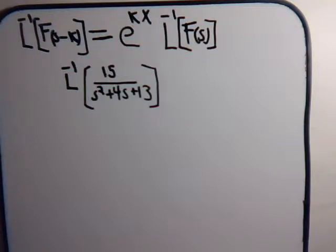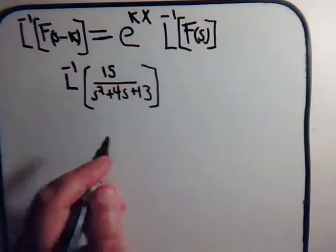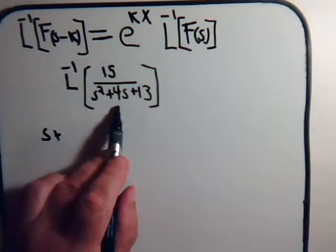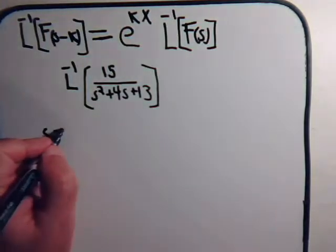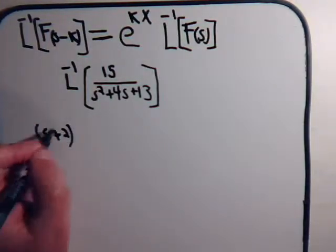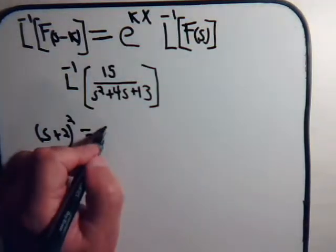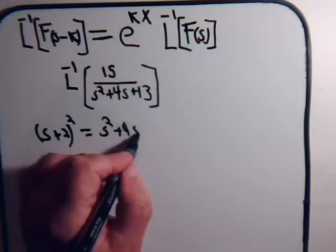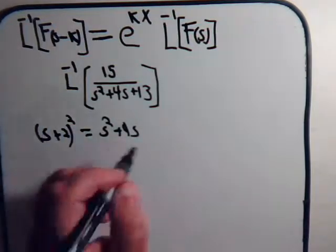The way to handle these when we have these polynomial type expressions in the denominator is to see if we can rewrite it by using the complete the squares technique. So what we do is we take s plus one half of this coefficient which is 2 and we square that.